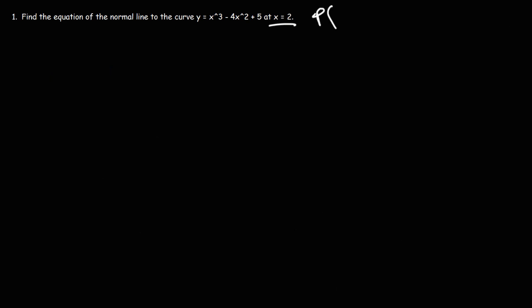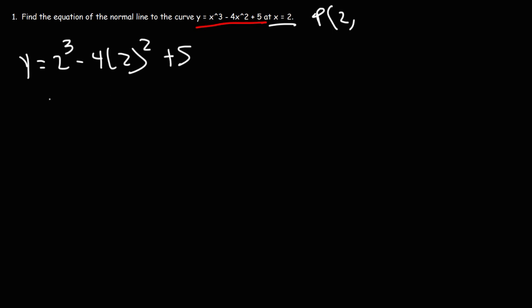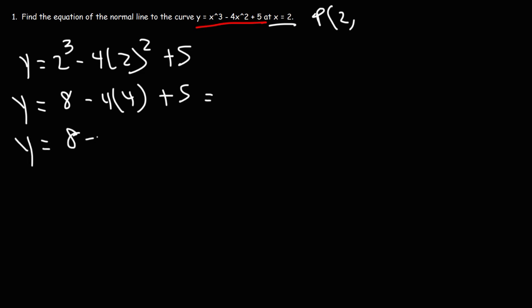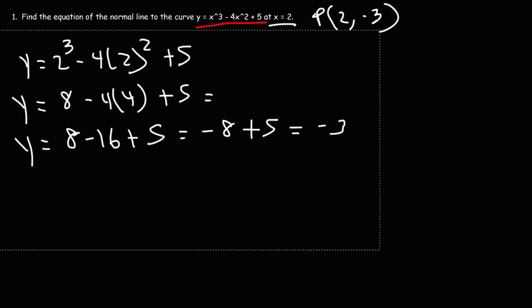First, we need the point. We have the x coordinate but not the y coordinate. To find the y coordinate, we plug our x value into the formula. Replacing x with 2: 2 cubed minus 4 times 2 squared plus 5. 2 cubed is 8, 2 squared is 4, and 4 times 4 is 16. 8 minus 16 is negative 8, and negative 8 plus 5 is negative 3. So the y coordinate is negative 3, giving us the point (2, −3).